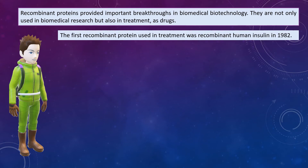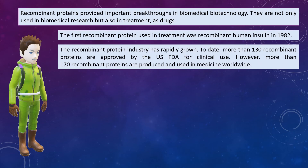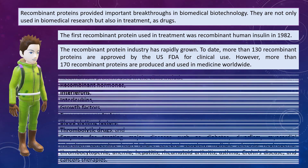These recombinant proteins have provided important breakthroughs in biomedical biotechnology. The first recombinant protein used in a treatment was recombinant human insulin, which was prepared in Escherichia coli. Since then, the recombinant protein industry has rapidly grown.